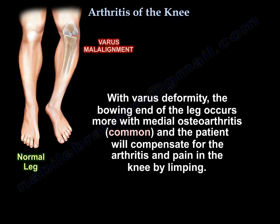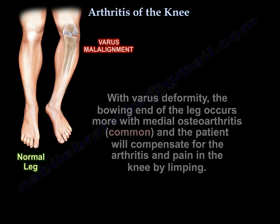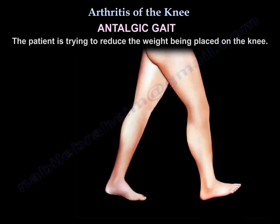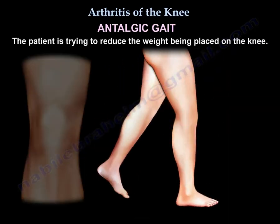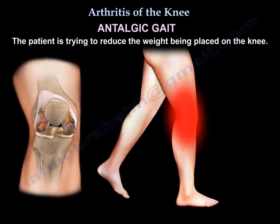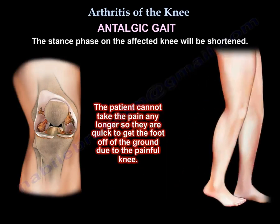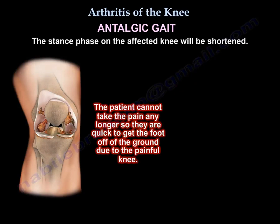The patient will compensate for the arthritis and the pain in the knee by limping. The gait is called antalgic gait. The patient is trying to reduce the weight on the knee. The stance phase on the affected knee will be shortened because the patient can't bear it anymore — they need to get their foot off the ground quickly because it's painful.